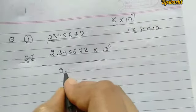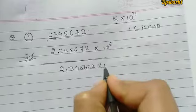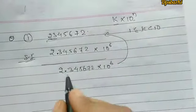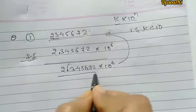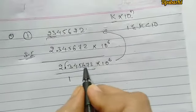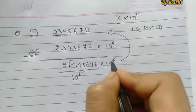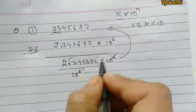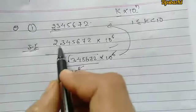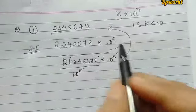We have a question: 2,3,4,5,6,7,2,8,6. If we write this in standard form, we move the decimal point — 1, 2, 3, 4, 5, 6 places. The result is 2.345672 × 10 to the power 6.